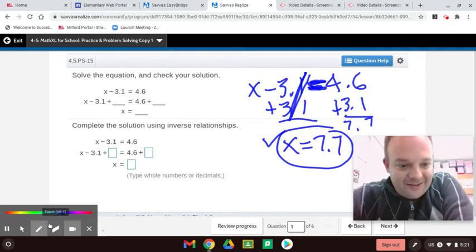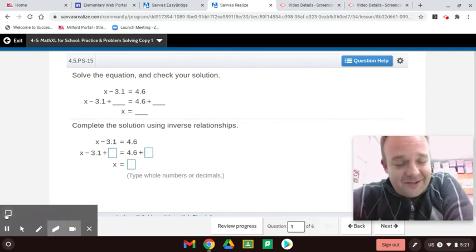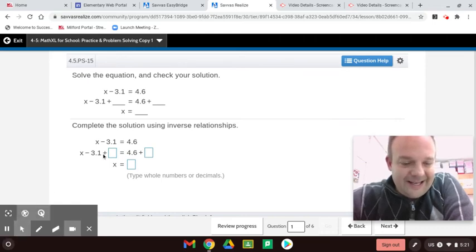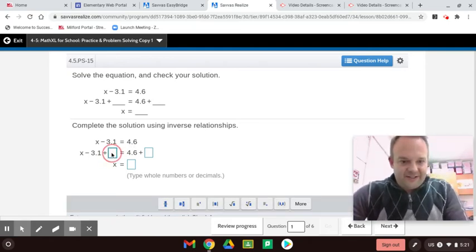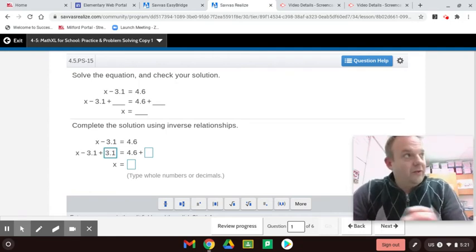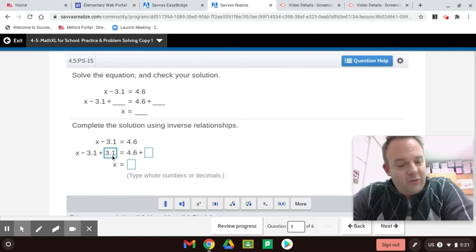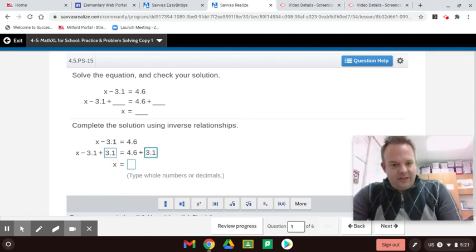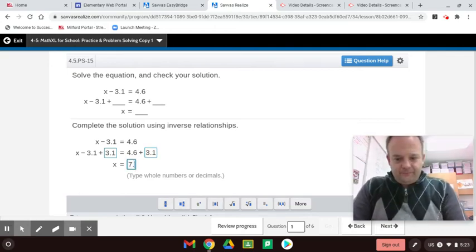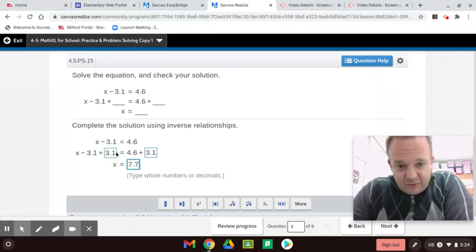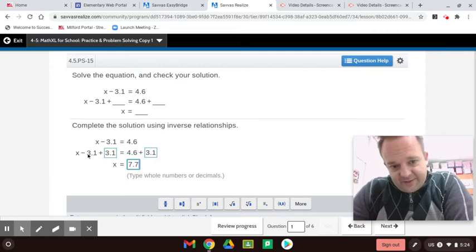A little neater than that. It was hard writing on the screen. And look, here's how Envision does it. The inverse of subtract, so this is the original equation, right? And the inverse of subtracting 3.1 is adding 3.1. So it's the same thing. I mean, I like my way better, but this is how we do it. And if you add 3.1 here, you've got to add 3.1 here. So then you get 7.7. So notice, whatever you do on one side, you're adding 3.1, and you're adding 3.1. These canceled out to 0.